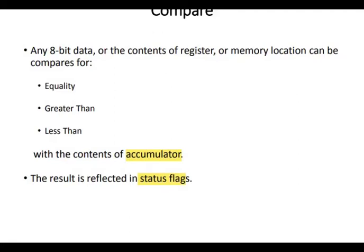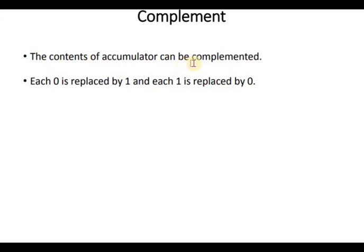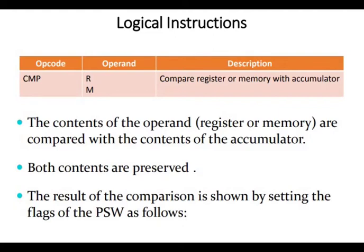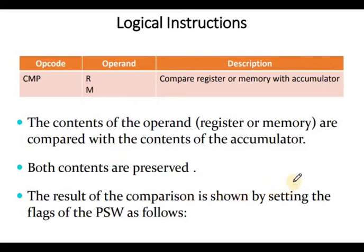The complement operation means each 0 is replaced by 1 and each 1 is replaced by 0. Now for logical instructions, we start with CMP — compare either register or memory with the accumulator. The contents of the operand, meaning register or memory, are compared with the contents of the accumulator. Both contents are preserved — there is no change in either the accumulator value or the register value. The result of the comparison is shown by setting the flags of the PSW.